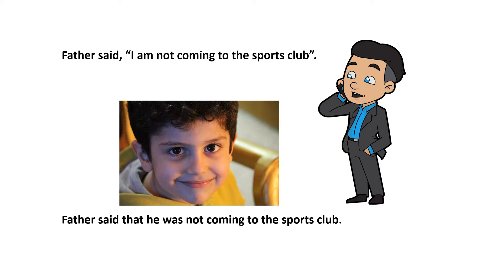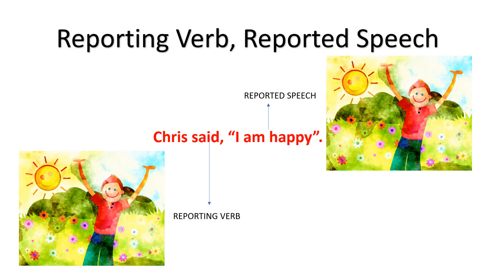The first sentence is in direct speech and the second sentence is in indirect speech. Before going into the details of the rules of reported speech, it is important to understand what we mean by the reporting verb and reported speech. Look at this sentence: 'Chris said I am happy.' The actual words of Chris — 'I am happy' — are called the reported speech. The verb 'said' is the reporting verb because it introduces the reported speech.